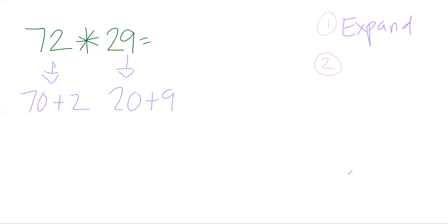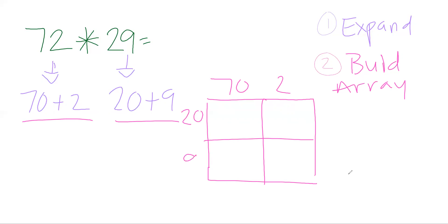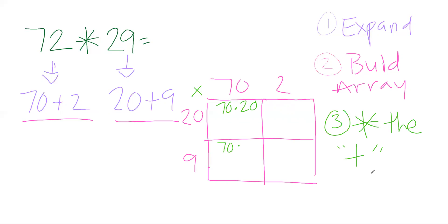Step two — build the array. I have two columns: 70 and 2. I have two rows: 20 and 9. Step three — multiply, then add. So we have 70 times 20, 70 times 9, 2 times 20, and 2 times 9. 7 times 2 is 14 with two zeros — that's 1,400.